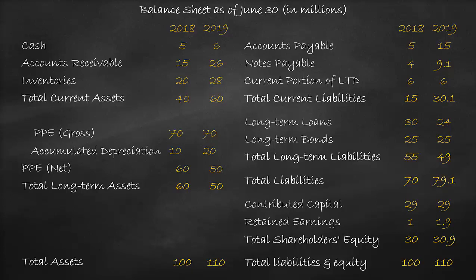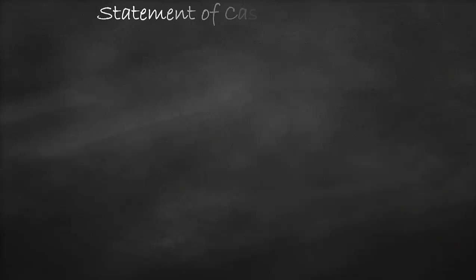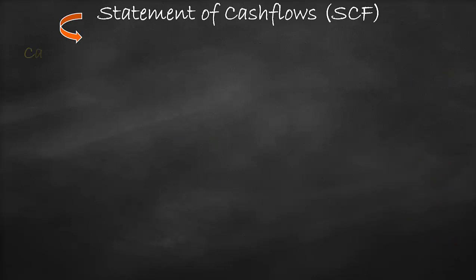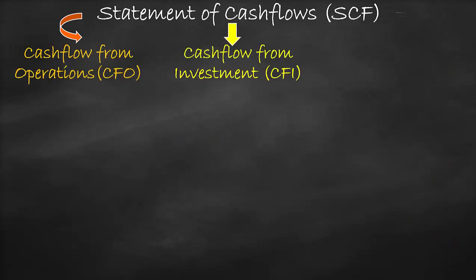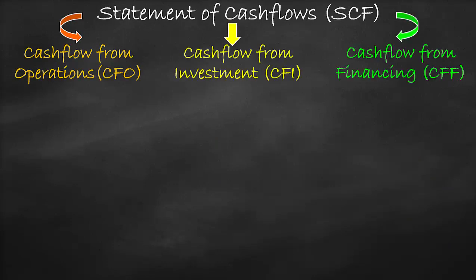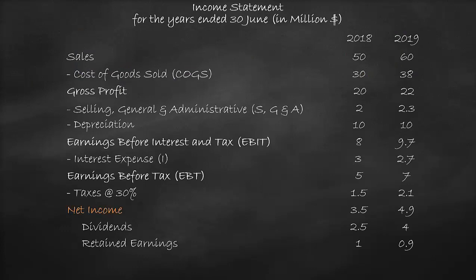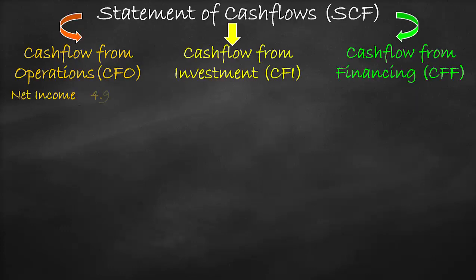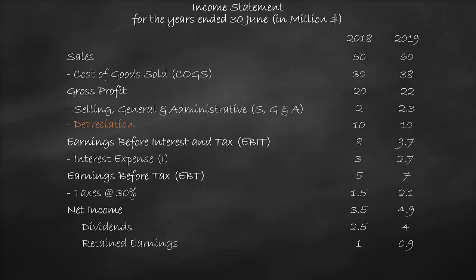We have three categories of statement of cash flows: cash flows from operations, cash flows from investment, and cash flows from financing. Let's start with cash flow from operations. Our first item is net income in 2019, which is $4.9 million. Then we add back depreciation from 2019 of $10 million.